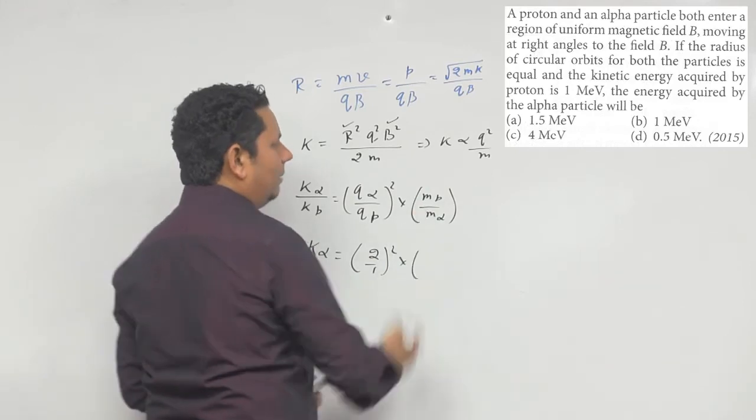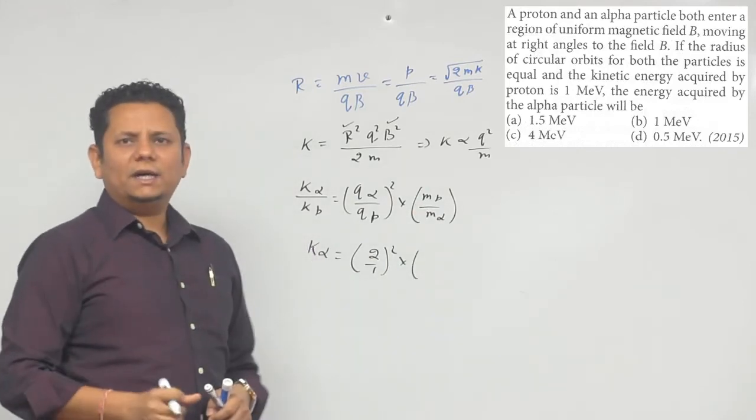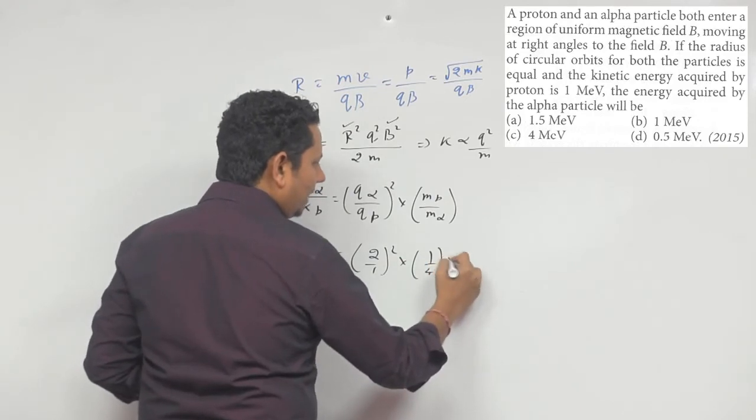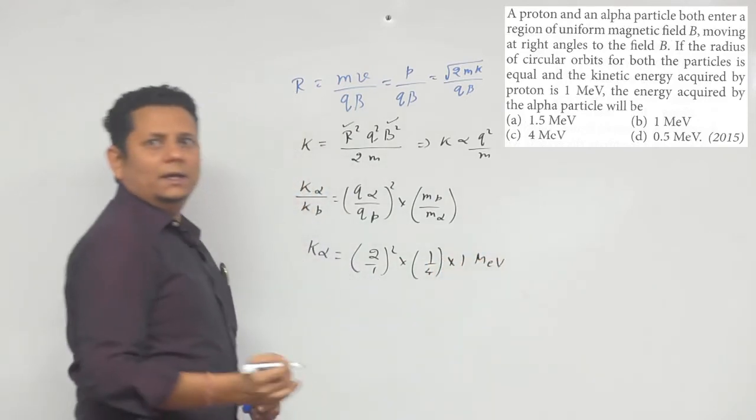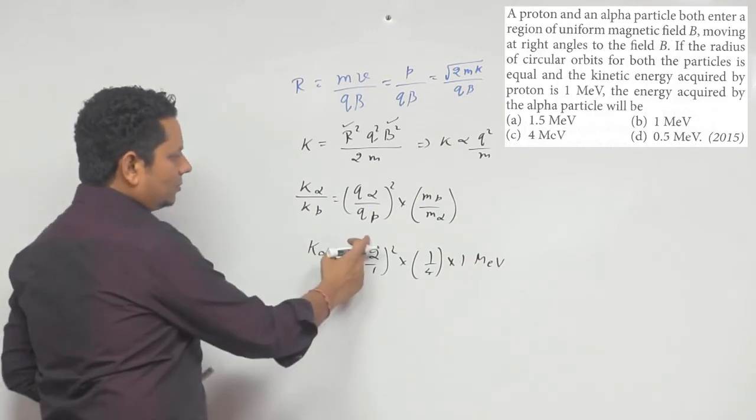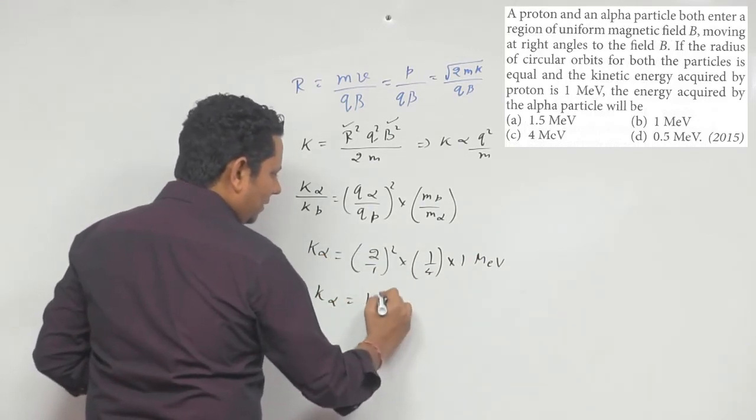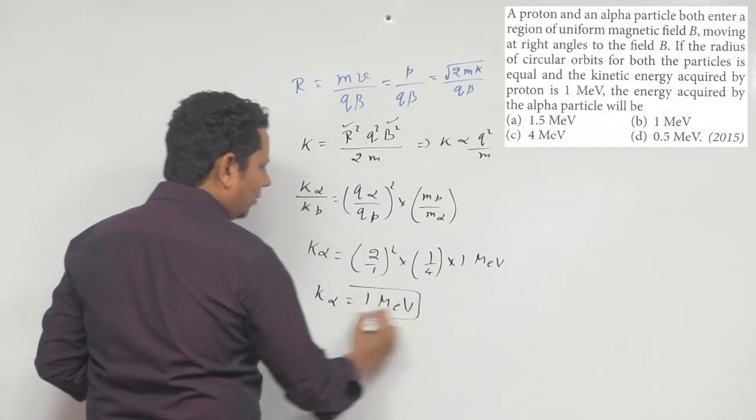multiplied by mass of proton / mass of alpha ka ratio. So mass of proton / mass of alpha ka ratio 1/4 hojayega, multiplied by 1 MeV. Ye aapki energy aayegi. So isko jab square karenge, 4 hoga, is 4 se cancel hojayega. So kinetic energy will be equal to 1 MeV.